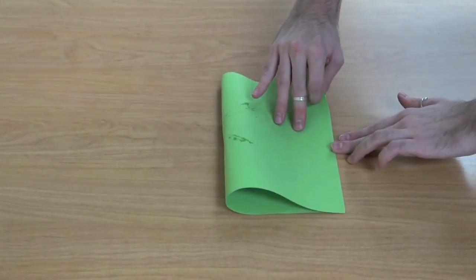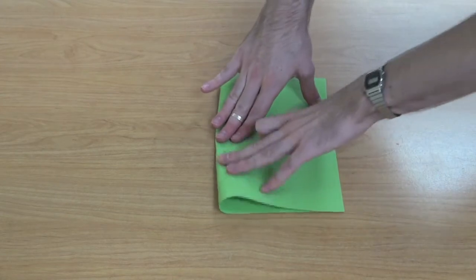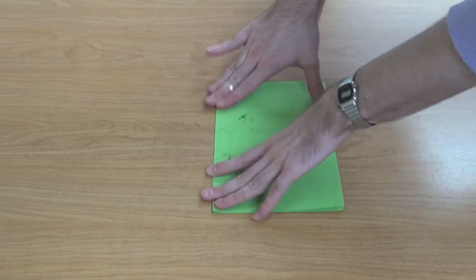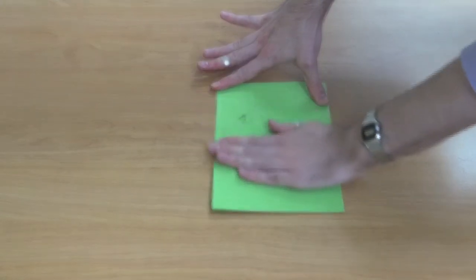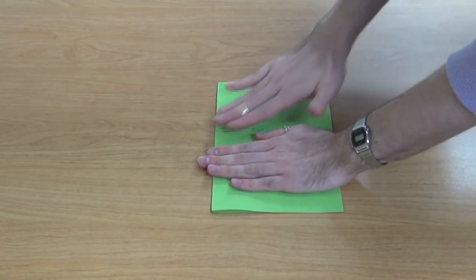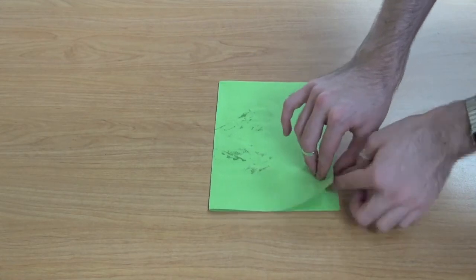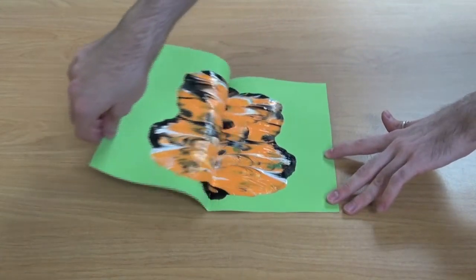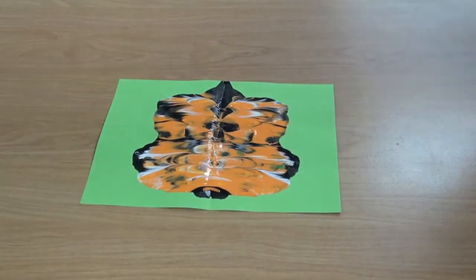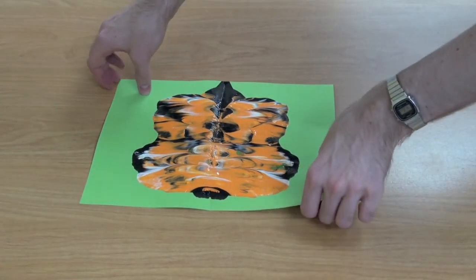So here we're going to fold our paper in half, spread it in two directions into the corners, and then when we open it, we should have a mirrored image. Now we're going to let this dry.